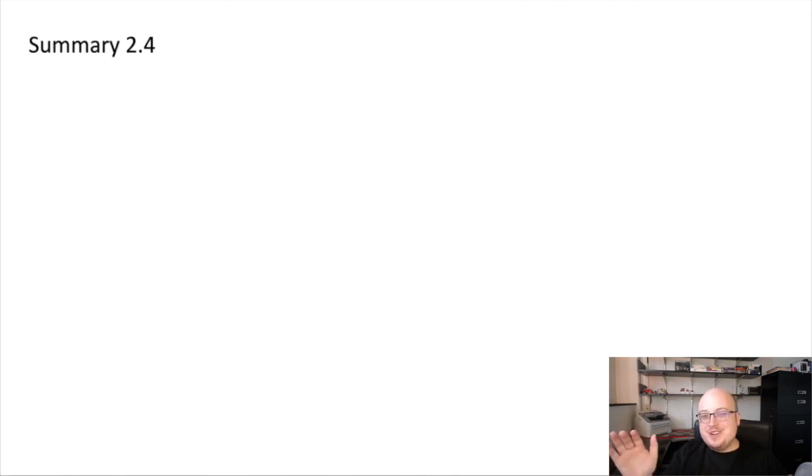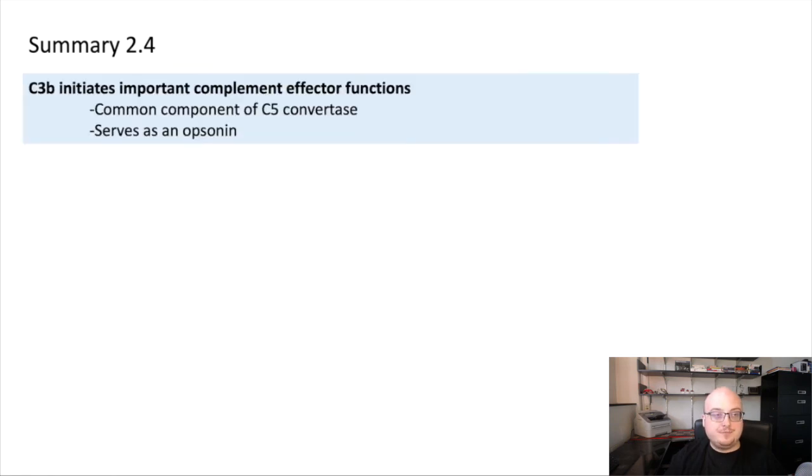Okay, we blew through those effector mechanisms of complement, so let's summarize the things that the complement system does. We started by saying that C3B initiates most of the important complement effector functions. It does so primarily, or not primarily, in one case by forming a common component of C5 convertases. So we had two different C5 convertases, but ultimately the formation of C5 convertase went on to promote the formation of the membrane attack complex. But besides that, a downstream function of C3B is to serve as an opsonin. It can coat either bacteria, pathogens, as well as antibodies, and target them for phagocytosis.